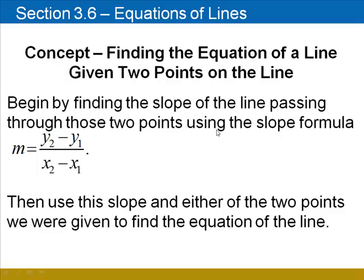To find the equation of a line given two points on the line, we begin by finding the slope of the line using the slope formula: m equals y2 minus y1 over x2 minus x1. Then we use this slope in either of the two points we were given to find the equation of the line.